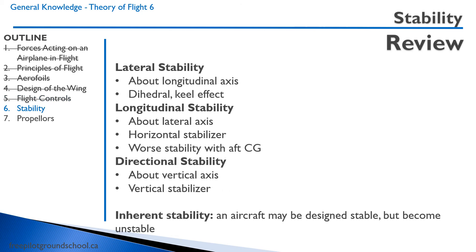Lateral stability is about the longitudinal axis — that is the wing moving left and right. The dihedral and keel effect are design features to increase lateral stability. Longitudinal stability is about the lateral axis, or pitch. The horizontal stabilizer size is the primary design consideration for longitudinal stability. With an aft center of gravity, you are likely to have worse longitudinal stability, although you may have a lower stall speed and a higher cruise or top speed. The vertical stabilizer provides directional stability about the vertical axis. An aircraft may be designed to be stable but become unstable with an aft center of gravity — this is called inherent stability.